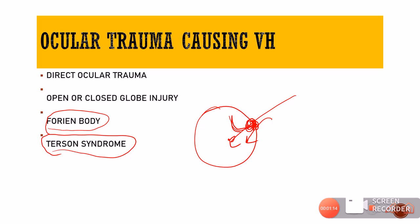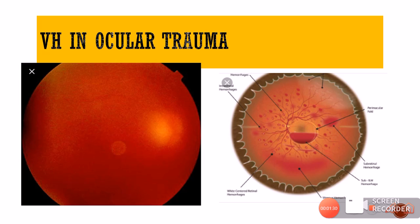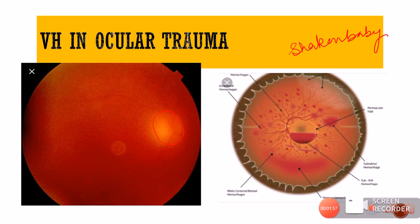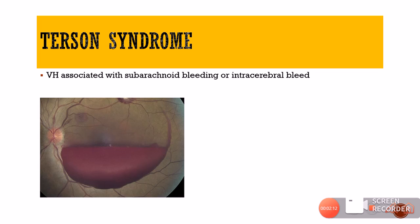Terson syndrome is subarachnoid or intracranial hemorrhage associated with intraocular or intravitreal hemorrhage. A picture of diffuse hemorrhage after blunt trauma is shown where the optic disc is hazily seen with a total reddish tint to the fundus. Shaken baby syndrome can also cause a similar picture in infants — retinal hemorrhages, premacular retinal folds, vitreous hemorrhages, and cotton wool spots. An infant presenting with vitreous hemorrhage should prompt ruling out shaken baby syndrome.